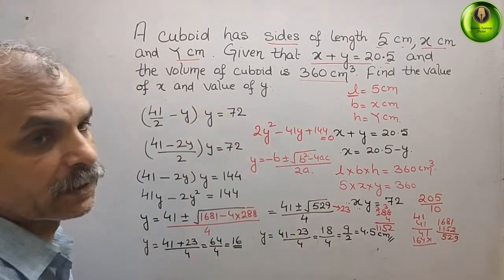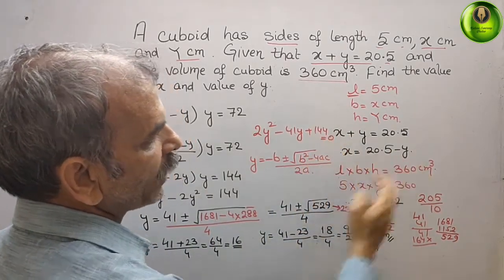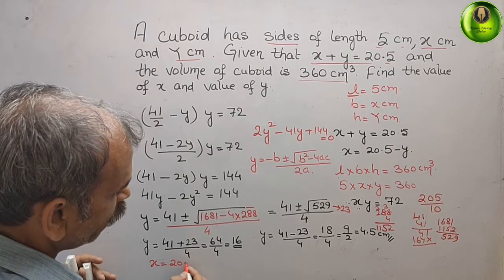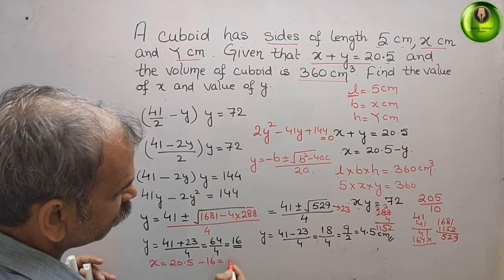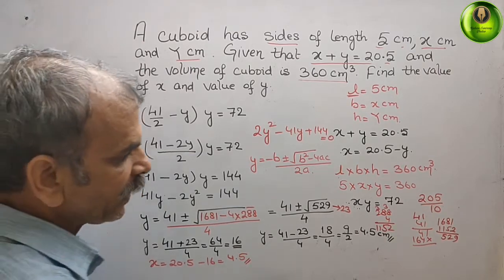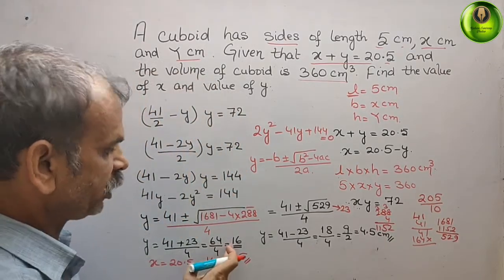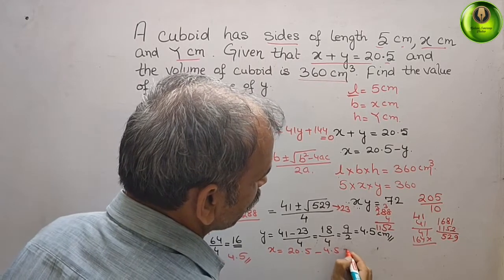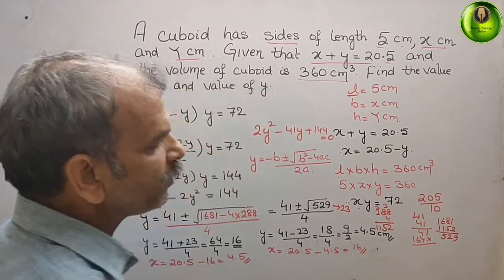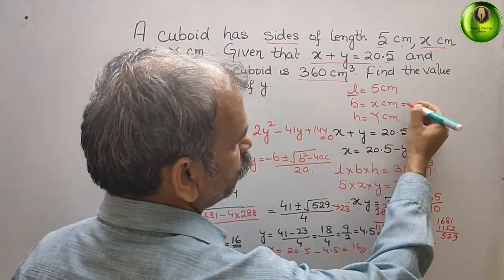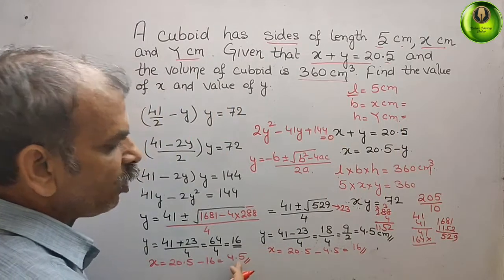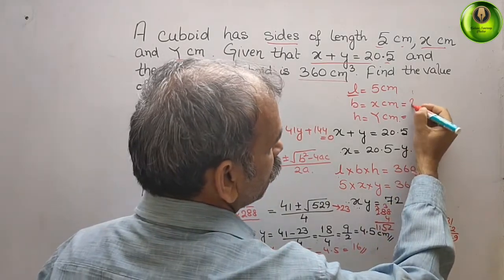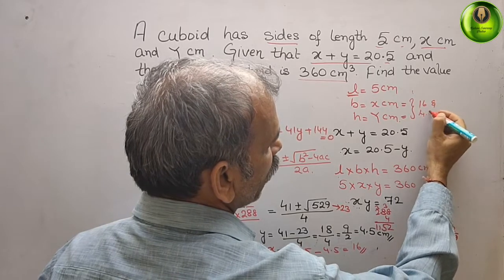Now substitute these values into x equals 20.5 minus y. When y equals 16, x equals 20.5 minus 16, which is 4.5. When y equals 4.5, x equals 20.5 minus 4.5, which is 16. Therefore, the values of x and y are 16 cm and 4.5 cm.